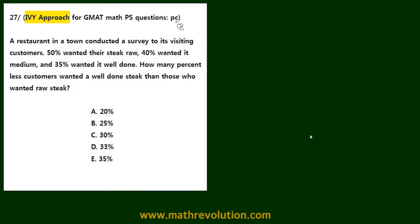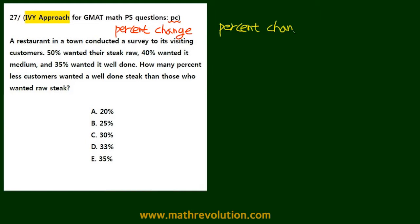Question number 27. This is a PC problem — PC stands for percent change — and we'll be using the IV approach to solve a percent change problem. Percent change can be calculated using the following equation: percent change equals after minus before, over before, times 100. This is the basic equation.